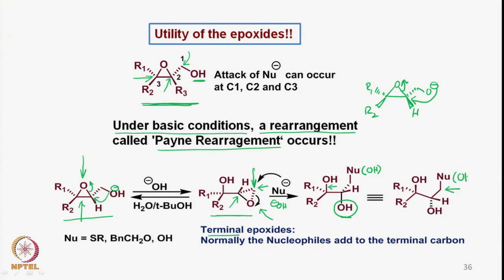So the nucleophilic attack takes place onto this carbon and the carbon-oxygen bond breaks to give the product. We can write the diol or the triol without actually changing the stereochemistry of the asymmetric center. This is a very important reaction demonstrating the utility of the epoxide alcohol. Since the Payne rearrangement allows the conversion of one type of epoxide to another—here the epoxide is not terminal whereas in the product it is terminal.